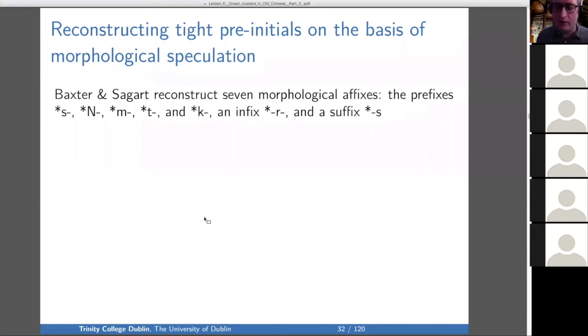Okay, so now on to morphological speculation. Baxter and Sagart reconstruct seven morphological affixes: the prefixes S, capital N, M, T, K, an infix R, and the suffix S.